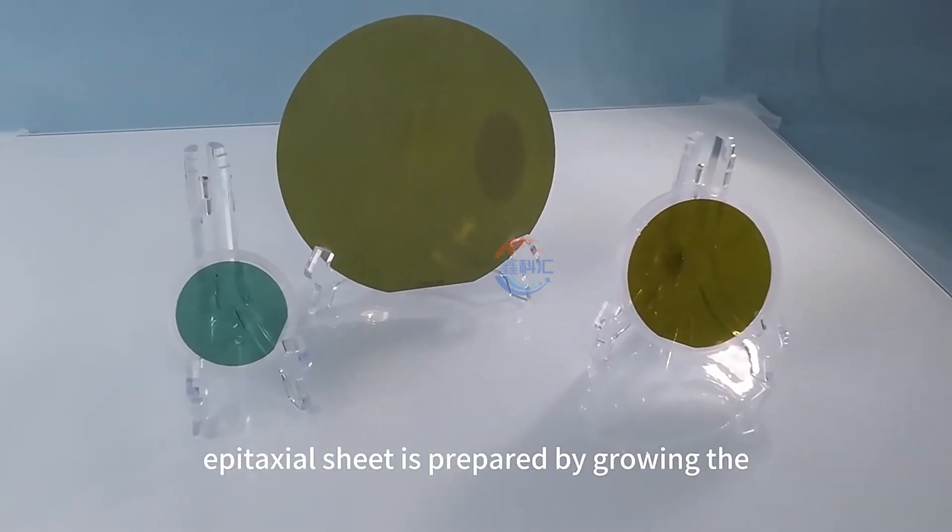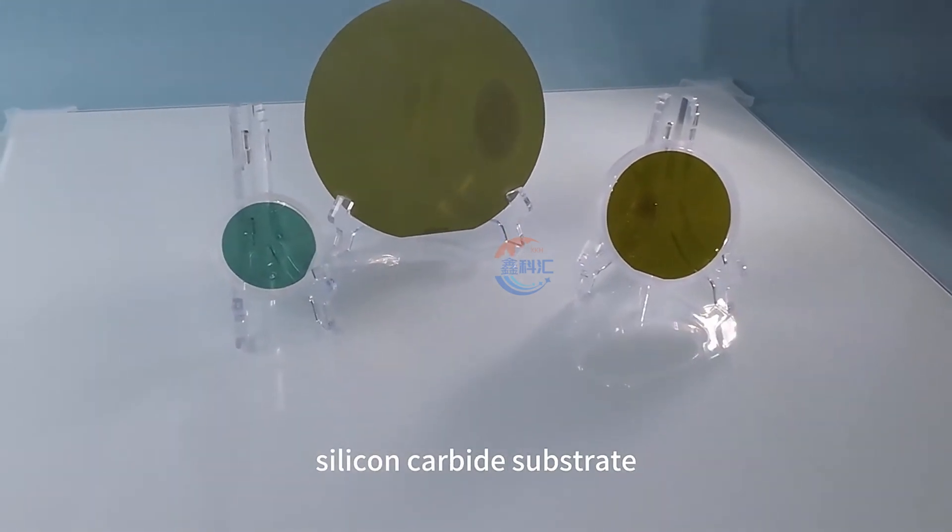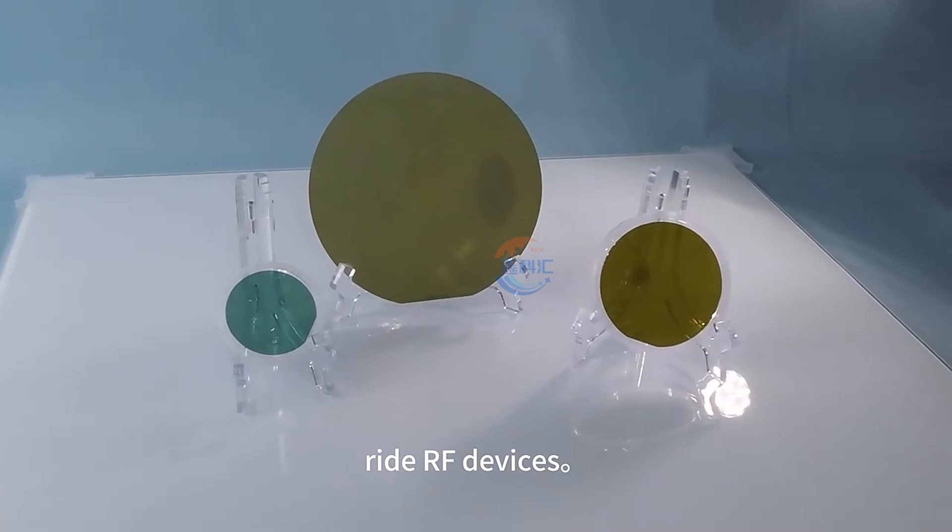Gallium nitride epitaxial sheet is prepared by growing the epitaxial layer on semi-insulated silicon carbide substrate, which can be further prepared into gallium nitride RF devices.